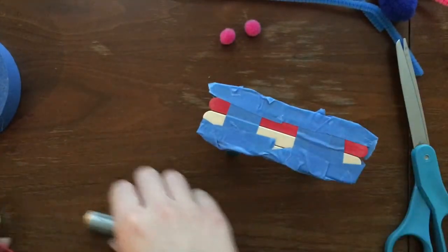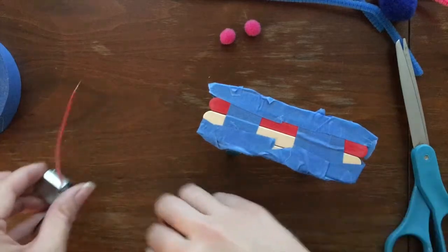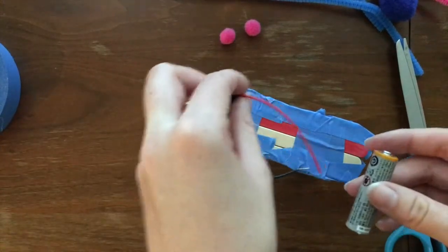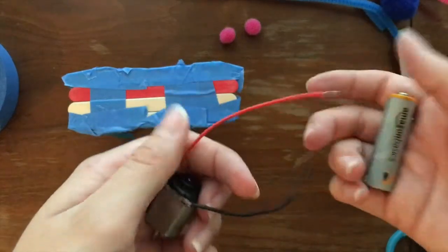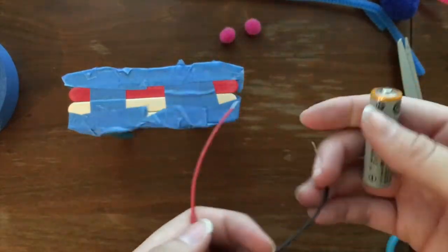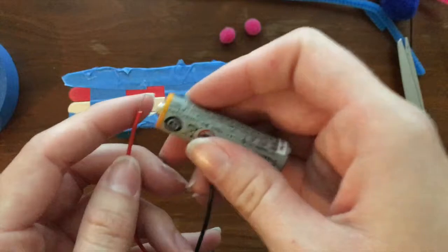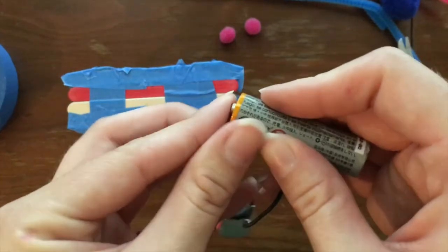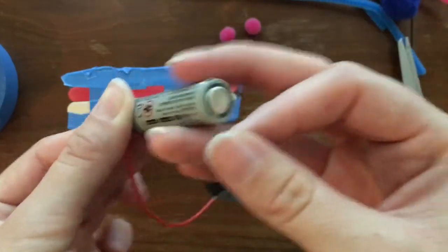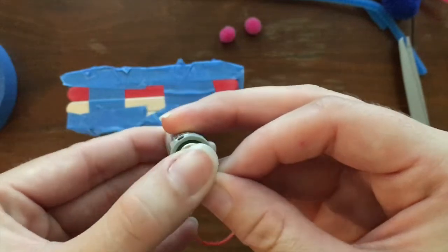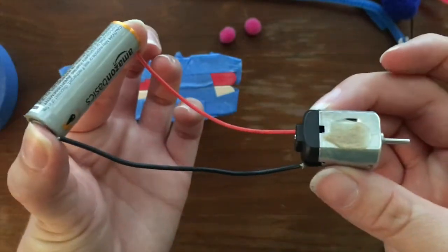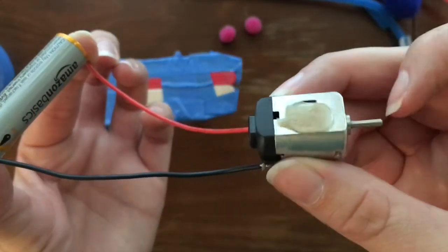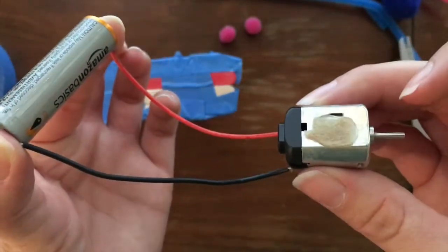Now we can start to make the circuit. So what we're first going to want to do is attach the battery to the motor just to make sure it works first. So we're going to go ahead and connect both sides of the wires to either side of the battery. We can hear it going so that we know that both the battery and the motor works. So that's good.